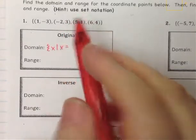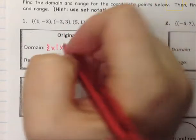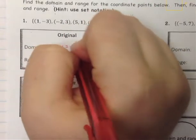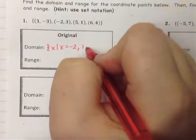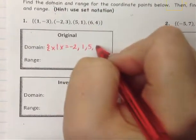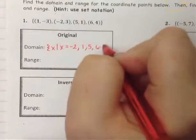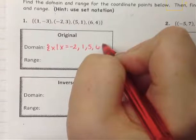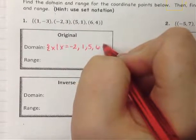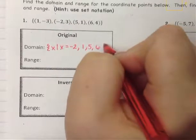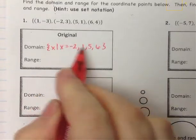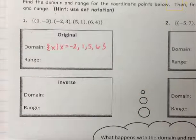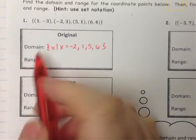So the smallest x value is negative 2, then 1, then 5, then 6. That's all of our x values, and you don't want to repeat any of them. Even if they repeat in the coordinates, you don't want to repeat them in the domain.